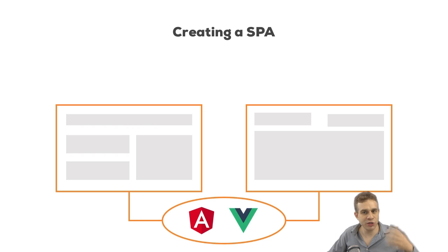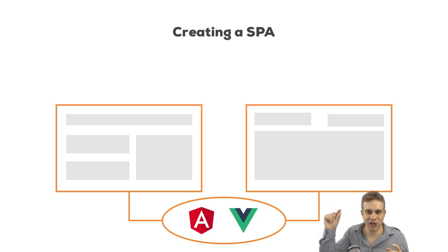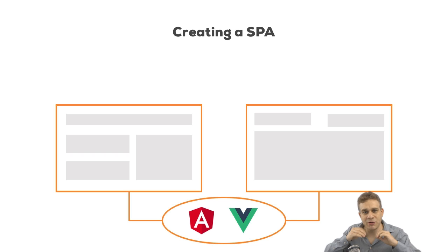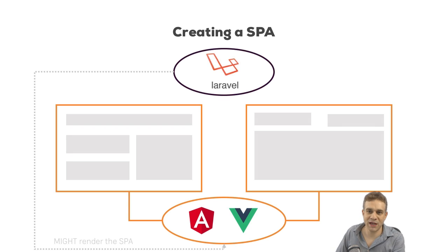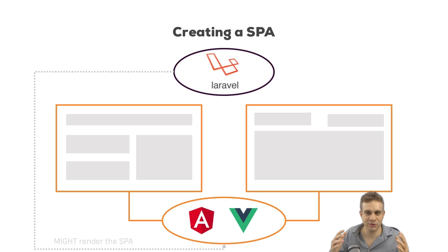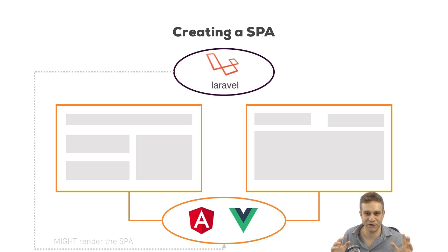But technically, no new pages are loaded from the server. Instead, only the URL changes and parts of your page are re-rendered. Those single page applications can be served by any server and typically are not served by your Laravel application, though that would be possible. You could serve an index.php file which simply holds your index.html content, which starts your Angular 2 or Vue.js application and does nothing else.